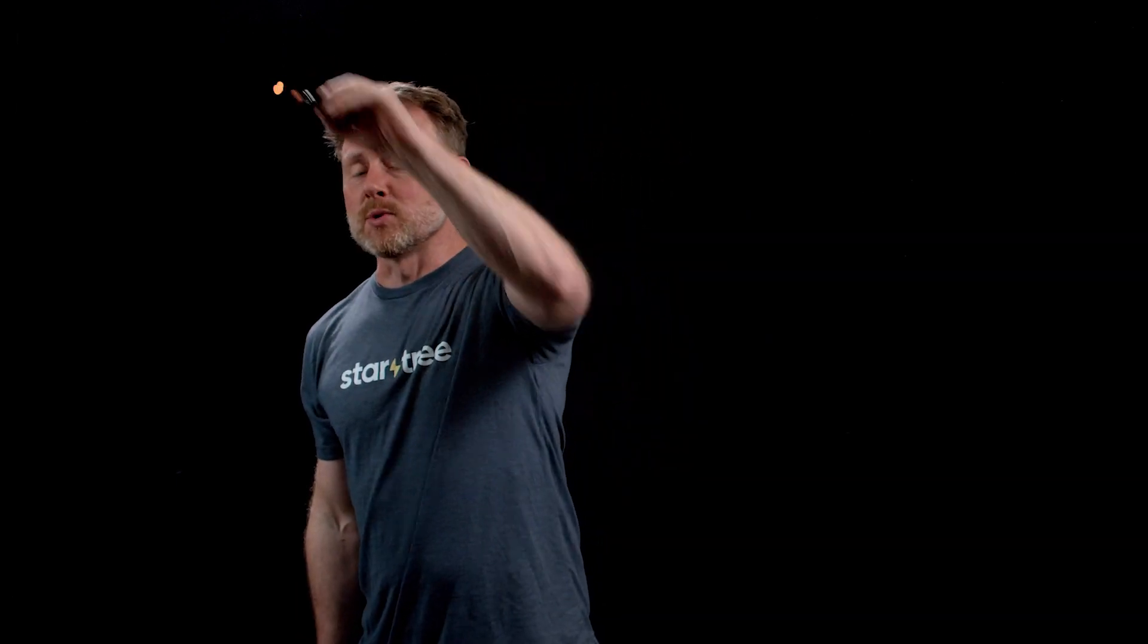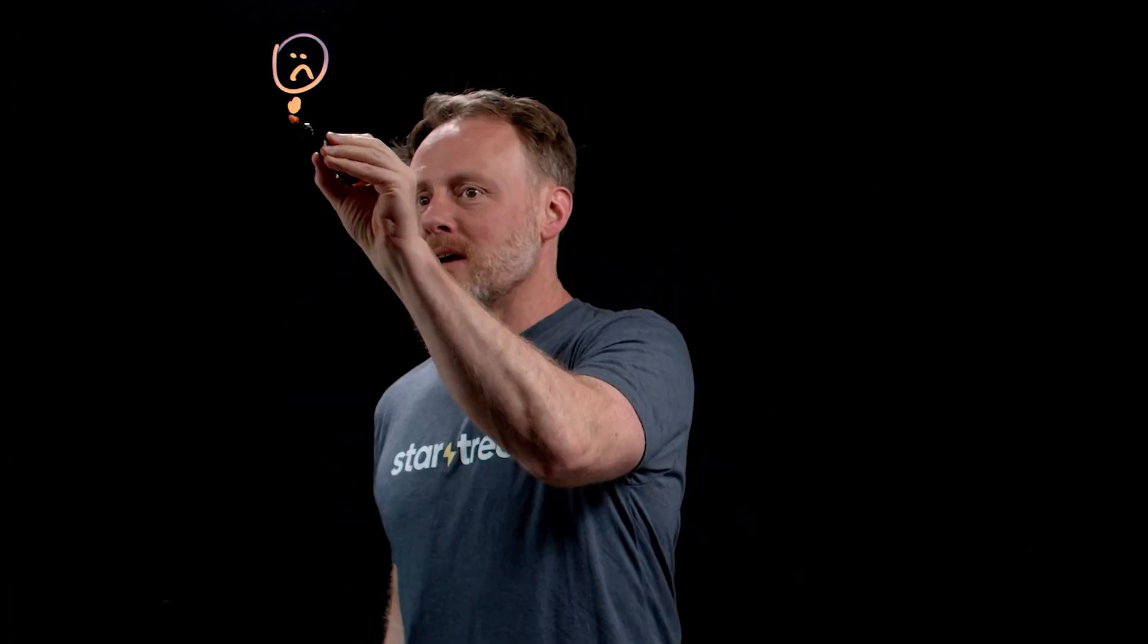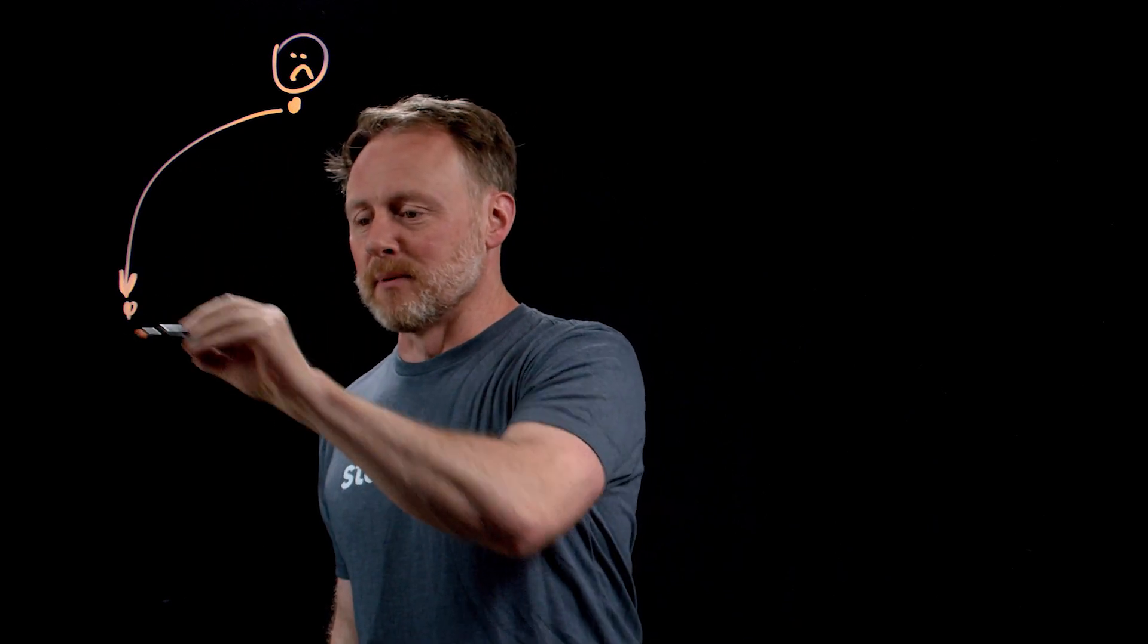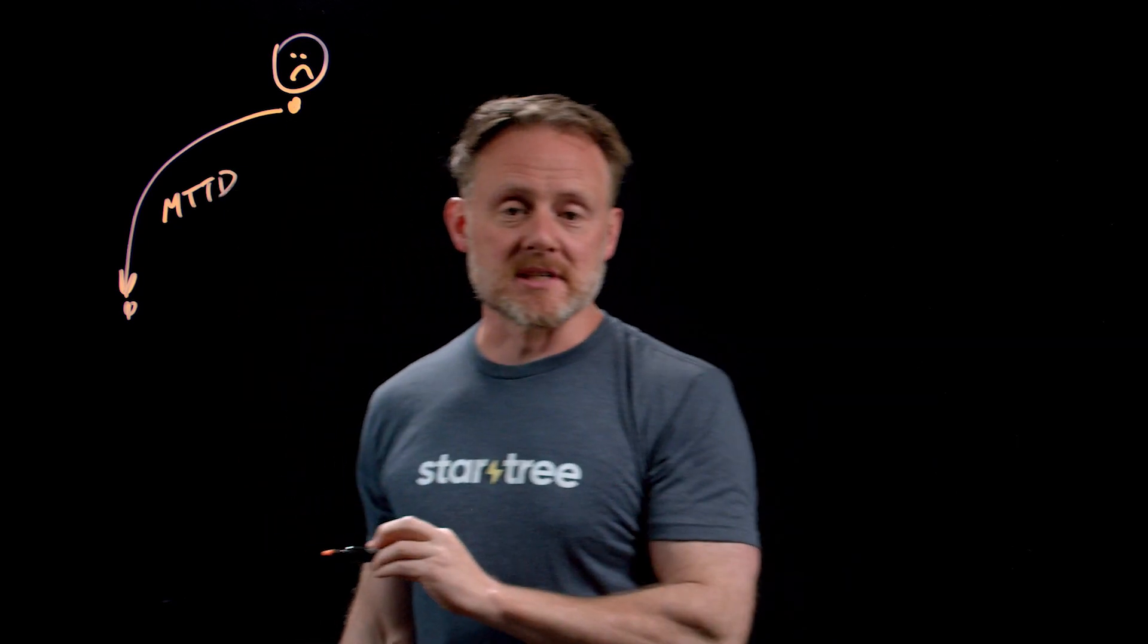Let's take a look at the life cycle of an anomaly. So out in the world, some bad thing happens. We don't know what it is. I'm sure you can fill in the blank in terms of your business and what you do. We'll just draw a frowny face. There is some anomaly out in the world. Now, you don't know yet that that has happened. That's a little bit of a chilling thought. So some amount of time goes by before you actually know. We'll call that the mean time to detect.